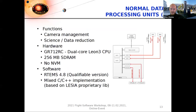Now we come to the Normal Data Processing Units, which are connected to the FEEs. Every NDPU is responsible for two cameras. Its main functions are camera management and science data reduction. The hardware is a dual-core Leon 3 CPU, GR712RC, with 256 megabytes of SDRAM but no non-volatile memory. The software is based on RTEMS 4.8, the ISARQ-qualifiable version. As was said yesterday, the state of the art of today will be archaeological — but you can see that sometimes the state of the art already is archaeological. The NDPU software is a mixed C++ implementation based on a proprietary library from our partner Lesia.